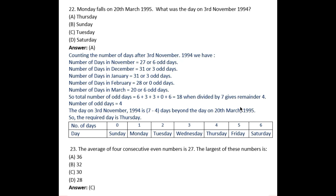To solve these types of problems, first calculate the number of days after 3rd November 1994. Number of days remaining in November: 27, giving 6 odd days. To calculate odd days, divide the total days by 7. For example, 7×1=7, 7×2=14, 7×3=21. So there are 6 odd days for November.